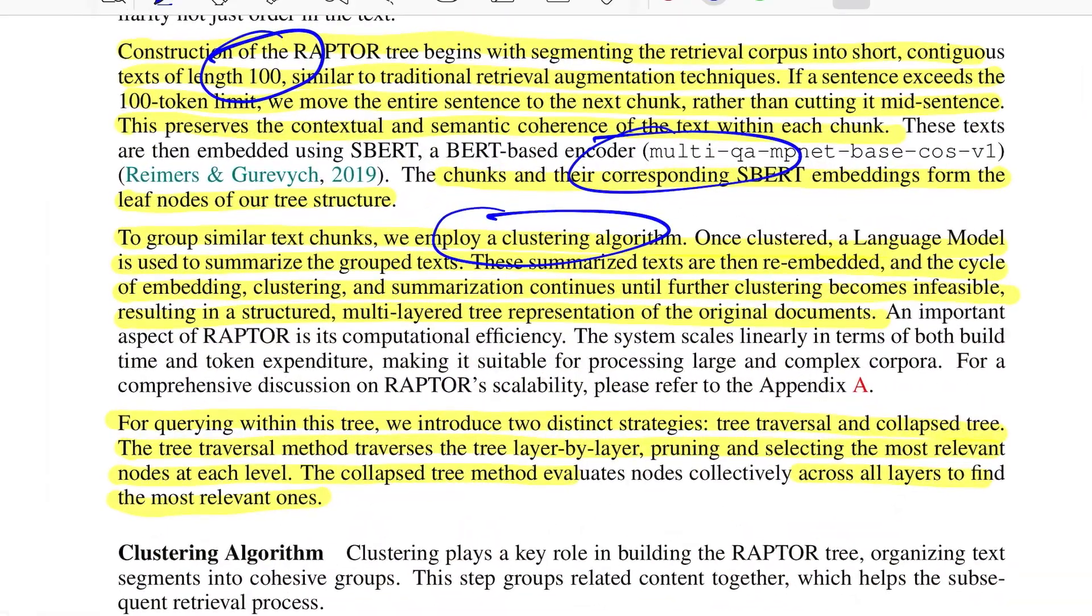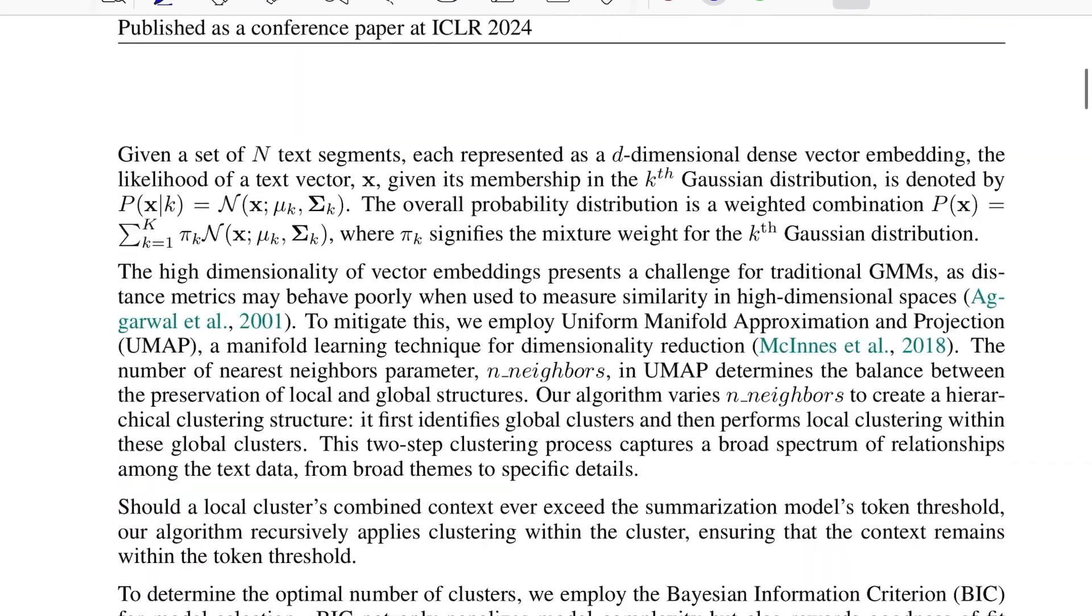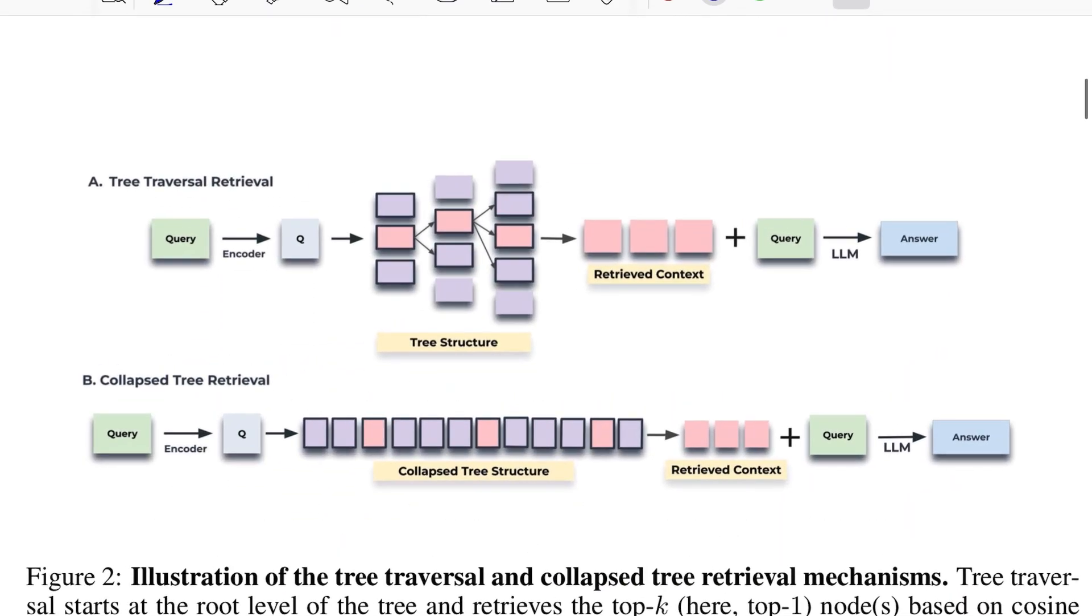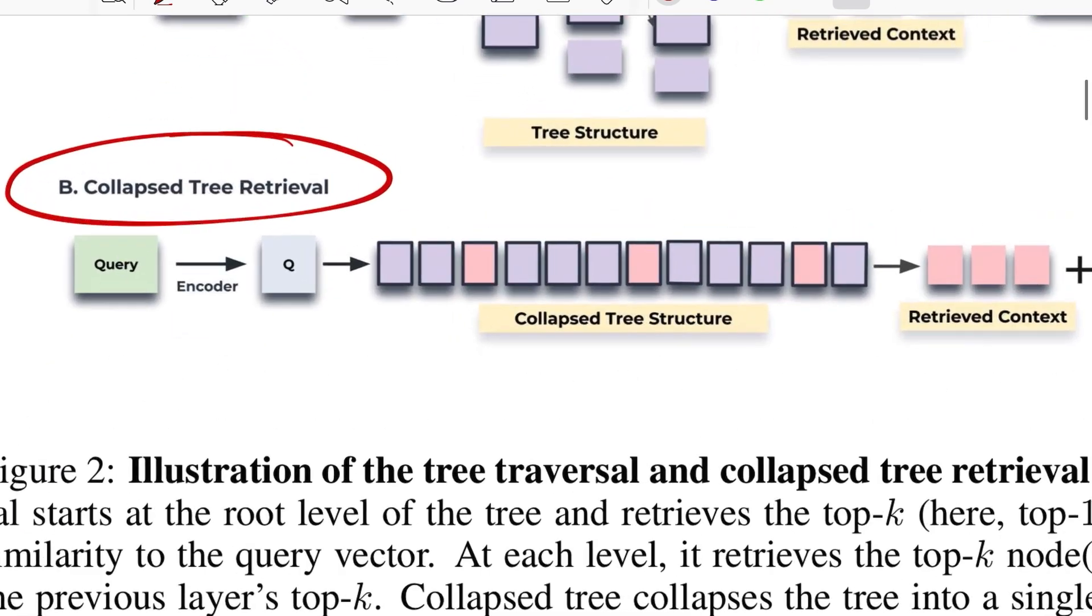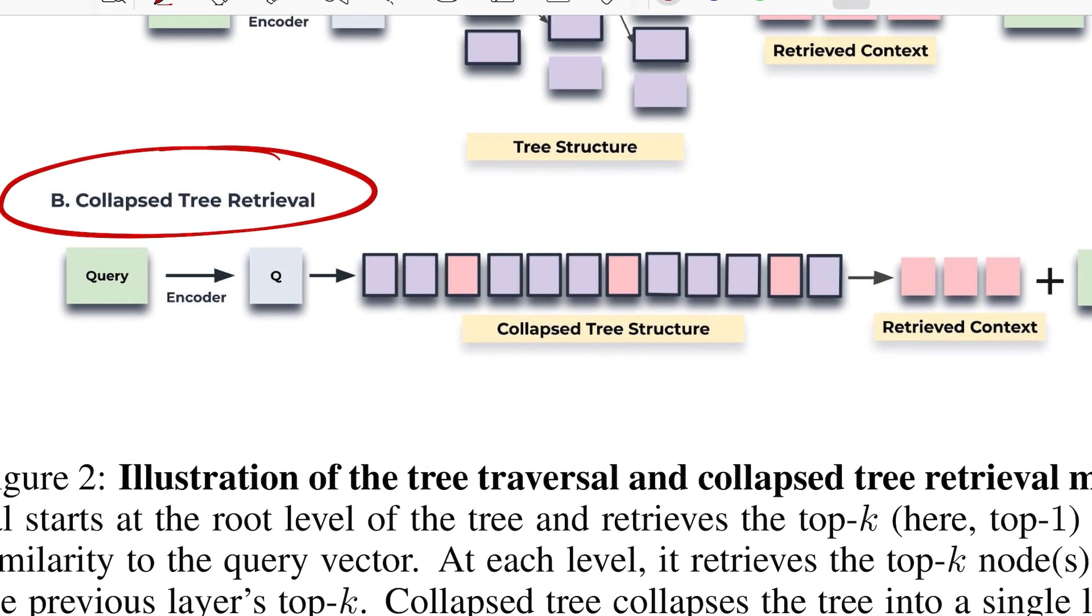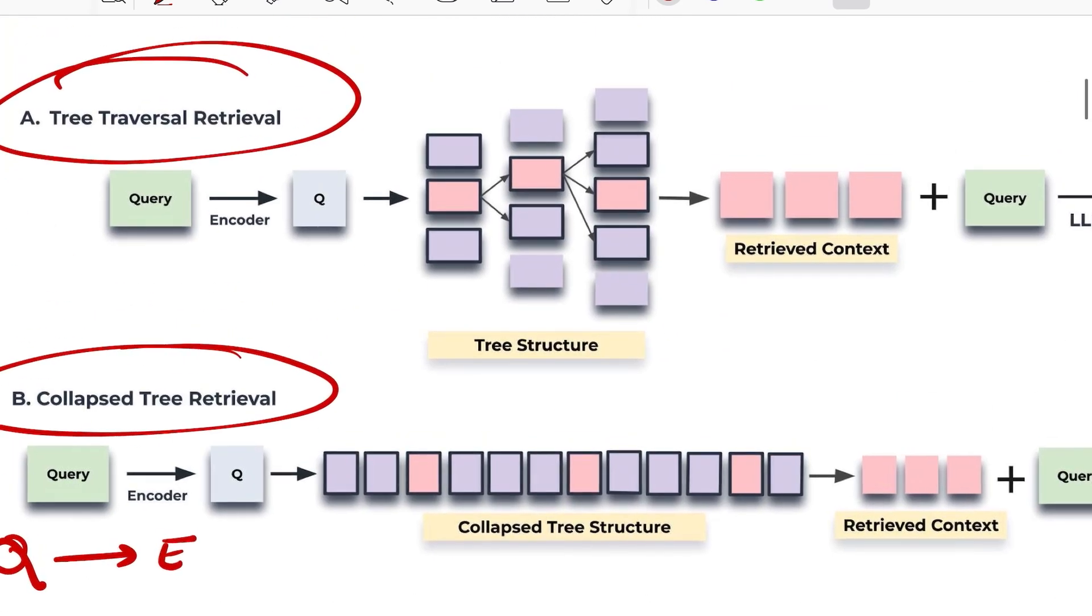Then for querying, yeah, so now we talk about the querying piece. They have a diagram. There are two things that they propose: the first is tree traversal retrieval, the second one is collapsed tree retrieval. So let's talk about the collapsed tree first. You have a query Q, you first encode it and get an encoder representation of it, and then you flatten the entire tree out.